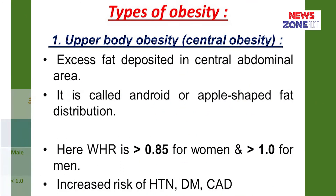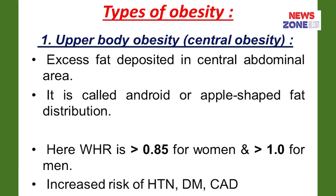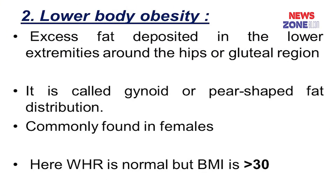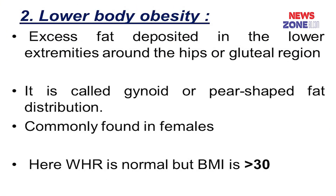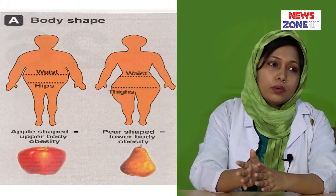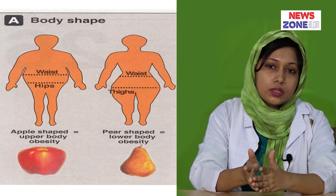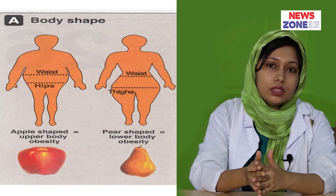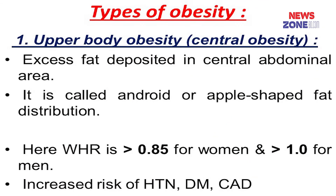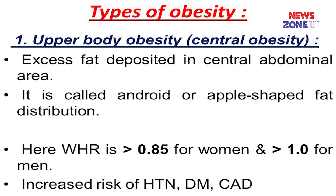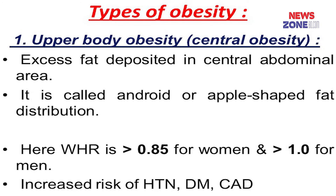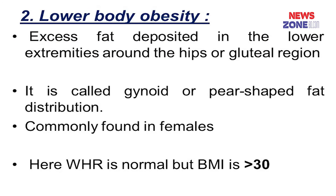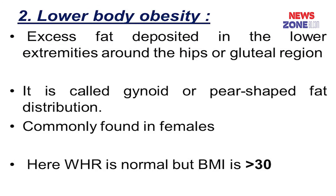What are the types of obesity? There are two types. One is upper body obesity or central obesity, and the other is lower body obesity or gynoid type of obesity. Upper body obesity is also called apple-shaped or android type of obesity. In this type, visceral fat deposition is more prominent, it most commonly occurs in males, and the metabolic and cardiovascular risk is very high. It causes type 2 diabetes mellitus, insulin resistance, and ischemic heart disease.